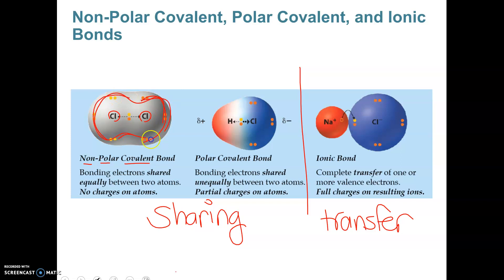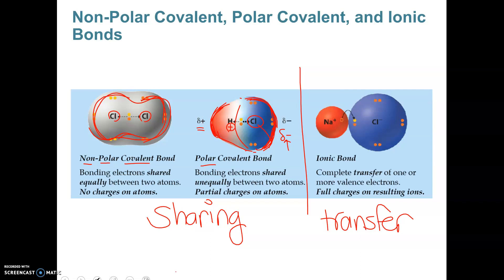You can imagine the electrons spread evenly around both atoms. In a polar covalent bond, you'd have two different elements, and one of them is more electronegative, meaning it pulls harder on the electrons. So although the electrons hang around both, they spend more time around the more electronegative one, giving it a partial negative charge. The other side ends up slightly positive because the protons are still there but the electrons are hanging around less.